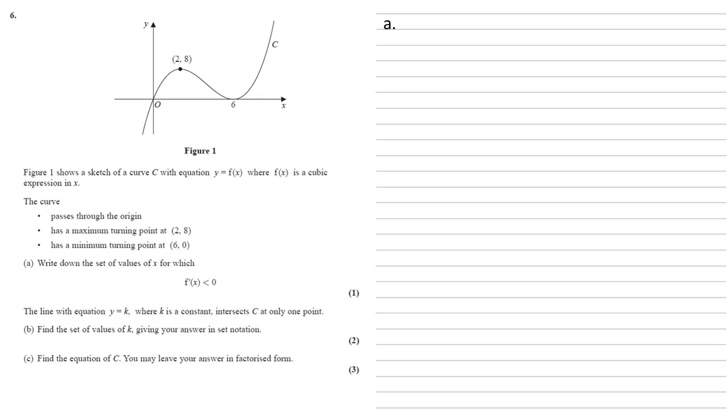For part A, we need to write down the set of values of x for which f'(x) is smaller than zero. So the differential of f is smaller than zero. Remember f'(x) gives us the gradient, so if it's smaller than zero, it's a negative gradient. We can see on the sketch that the only bit with a negative gradient is in the middle, going from (2,8) down to where it meets the x-axis at 6.